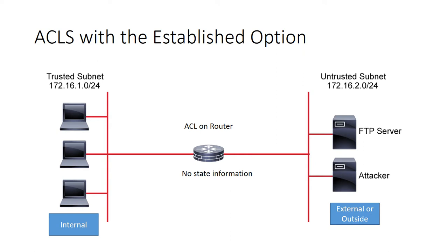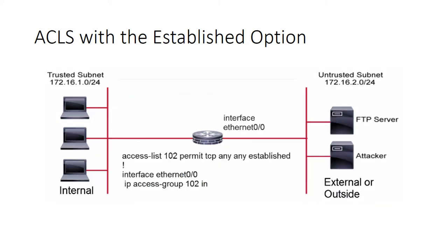When looking at packets coming into a trusted network, it means that the connection was initiated from the inside to the outside. If we look at the example access list — access-list 102 permit TCP any established — applied to interface ethernet 0/0 with IP access-group 102 in, the ethernet 0/0 interface would represent the outside or untrusted network.